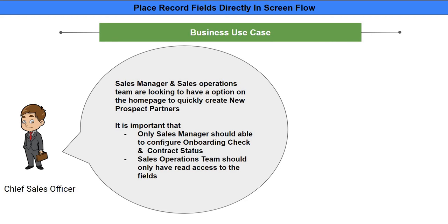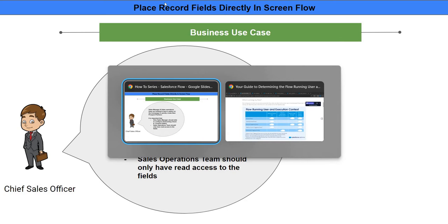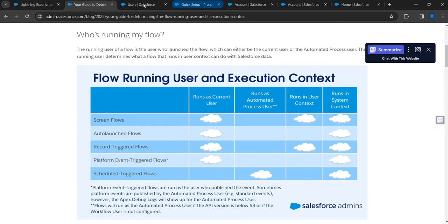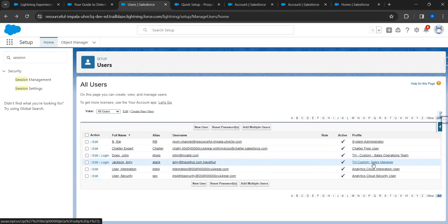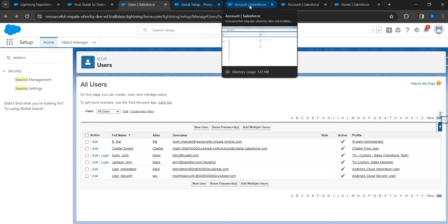Here's the catch: the sales manager should be able to configure onboarding check and contract status, whereas the sales operations team should only have read access to those fields. Currently there are two users - John Doe, who is on the sales operations team, and Amy Jackson, who is a sales manager.